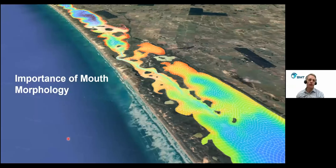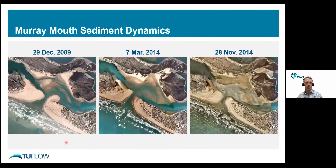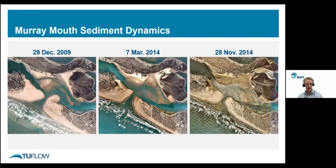The importance of mouth morphology is a particularly interesting feature with the Murray mouth. Looking at aerial views moving from 2009 to 2014 — recalling 2009 was the end of the millennium drought — we can see quite a bit of sand or sediment accretion on the inside of the Murray River mouth. This sedimentation affects the movement of freshwater and tidal inflows throughout the whole Coorong system. Changes aren't just local; they also impact the south lagoon. In 2014, much larger barrage inflows led to erosion and outward fluxes of sediment, resulting in a larger channel opening on either side of the Murray River.